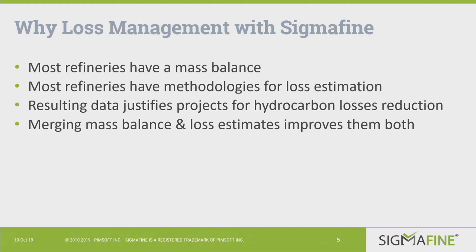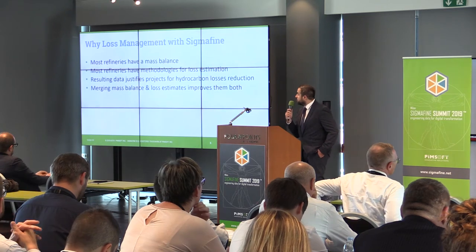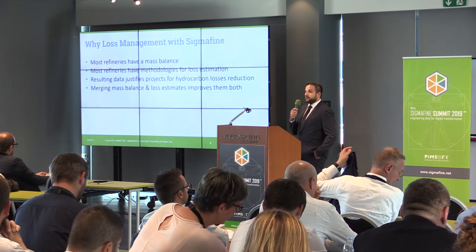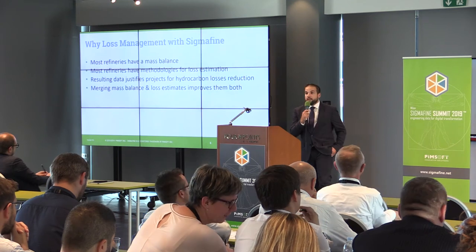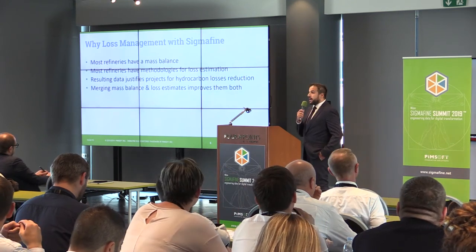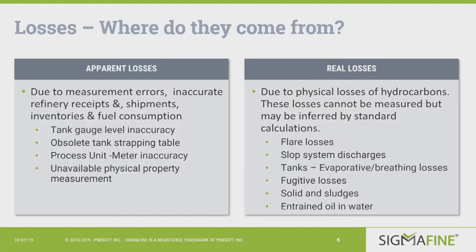Most refineries perform mass balance and hopefully use SigmaFine for reconciliation. Most refineries need good methodologies for loss estimation, which is always more important, and the results justify oil loss reduction projects. The question is: is it possible to merge the mass balance and the oil loss control, and if we do that using SigmaFine, can we improve the system and gain some benefits?